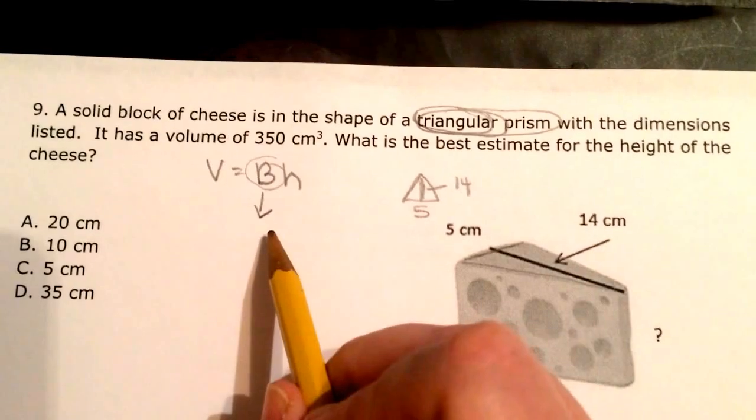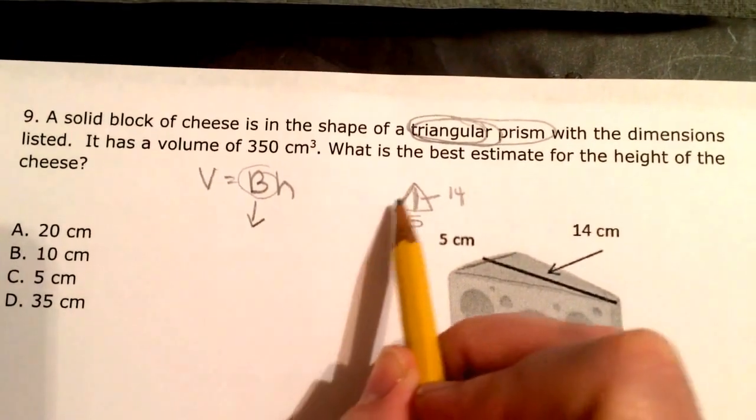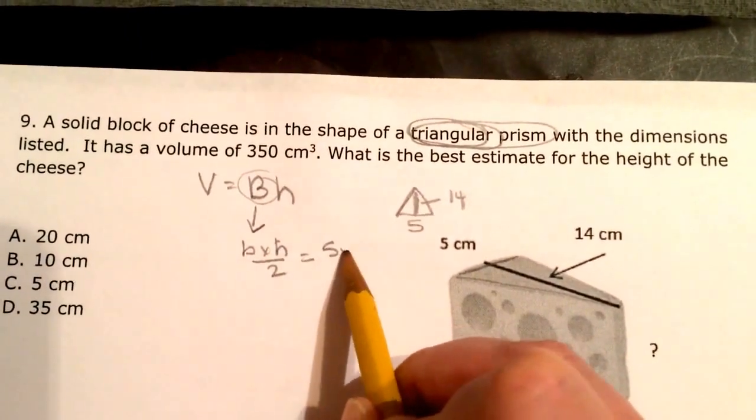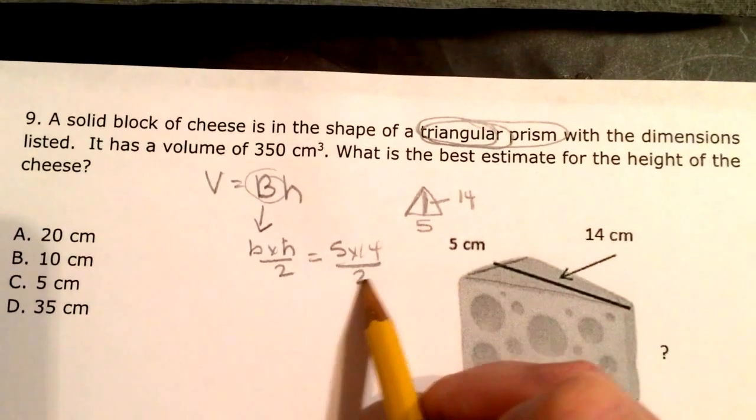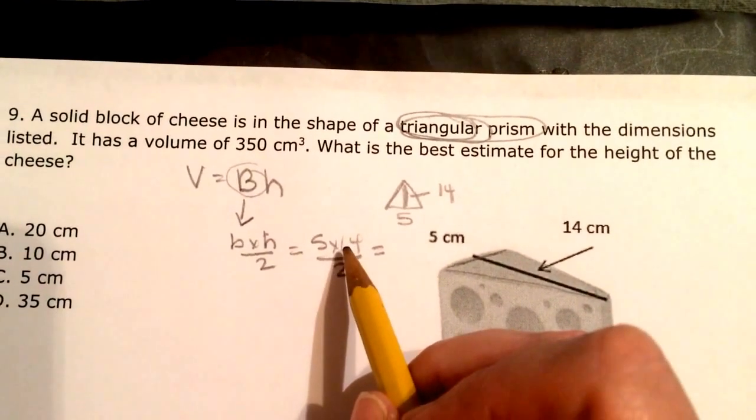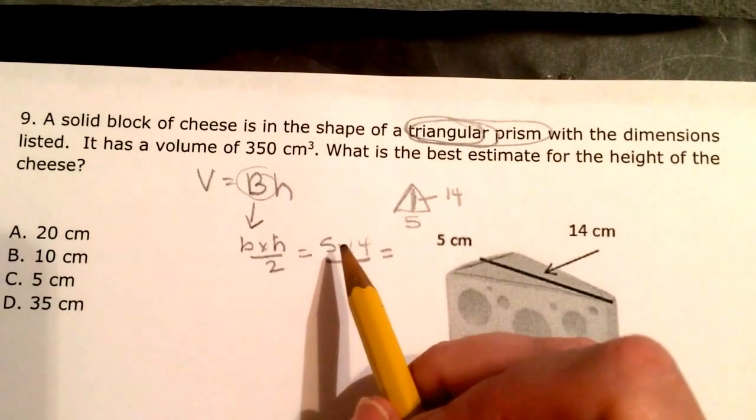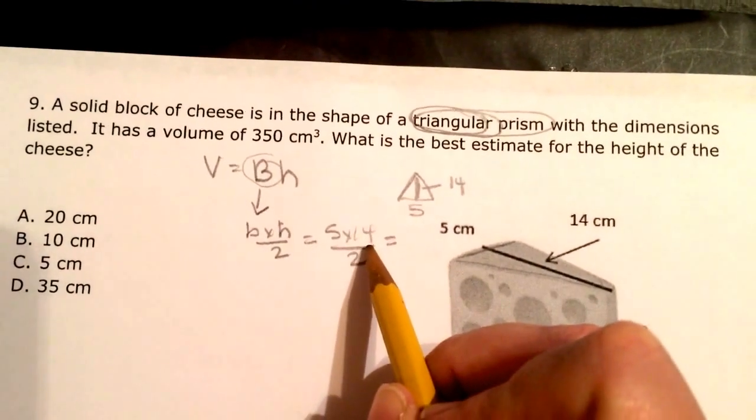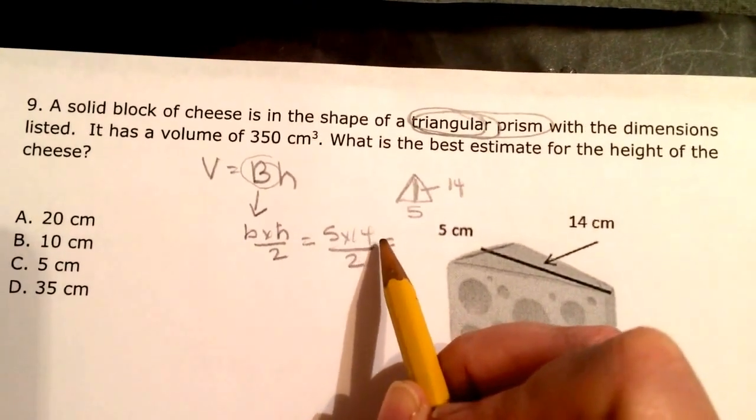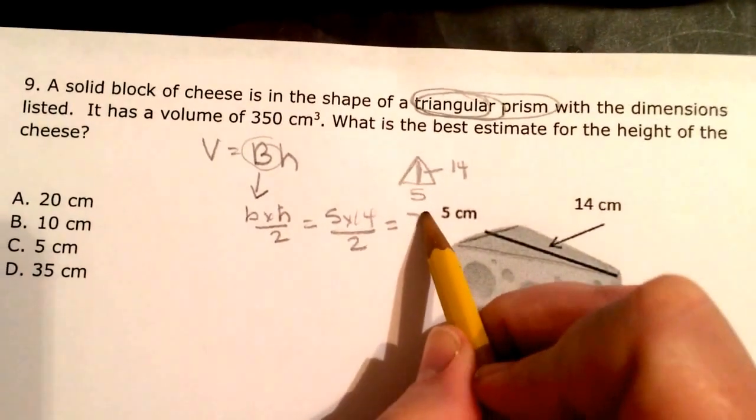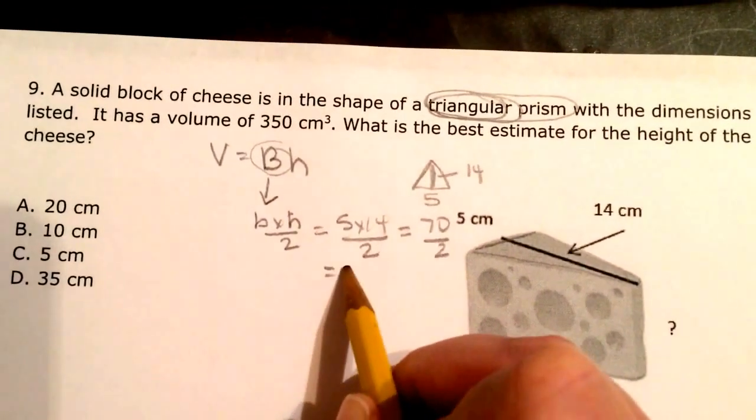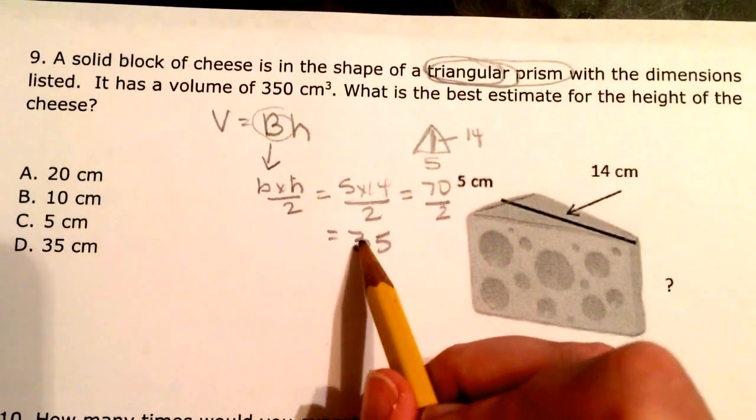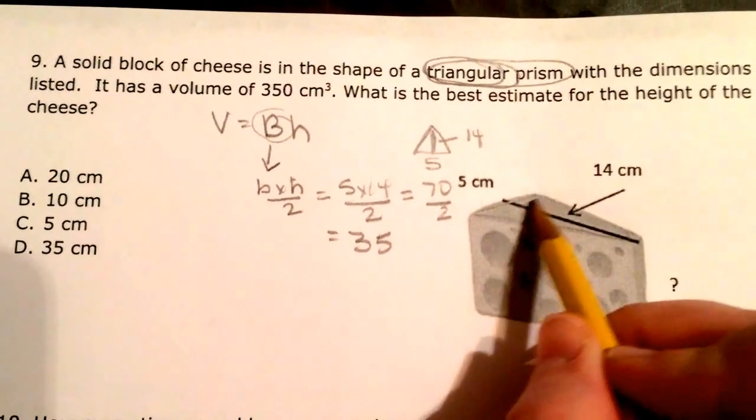Okay, so remember that the formula for a triangle is base times height divided by 2. So 5 times 14 divided by 2. Well, 5 times 14 is, let's see, 5 times 10 is 50, so 5 times 12 would be 60. So 5 times 14 would be 70 divided by 2. 70 divided by 2 is 35. Alright. So my area of my base is 35.